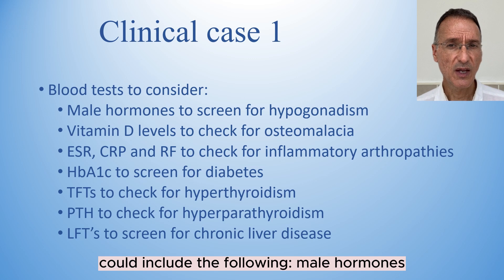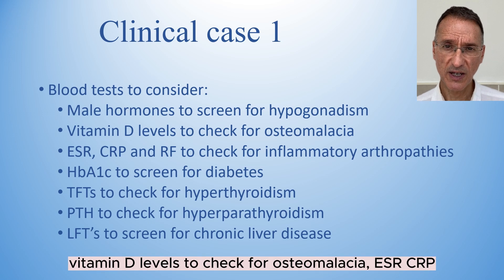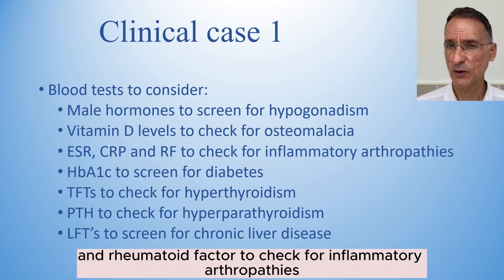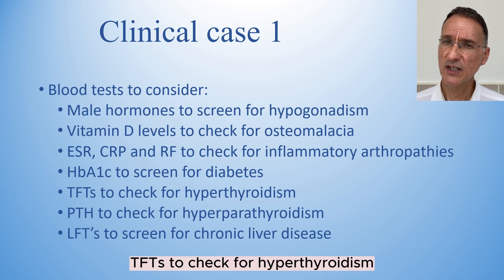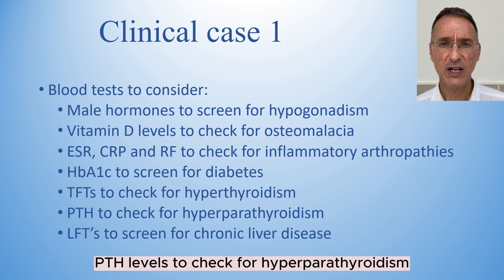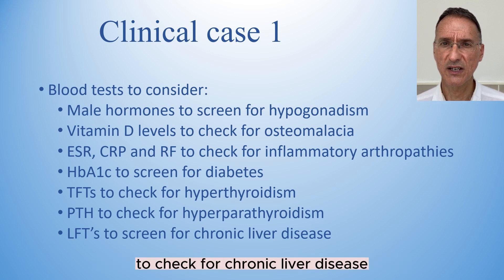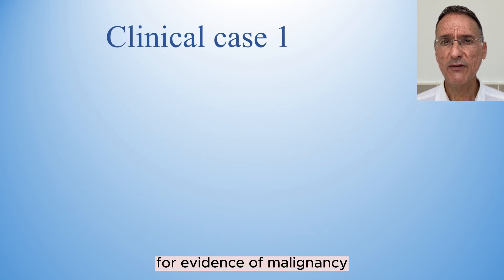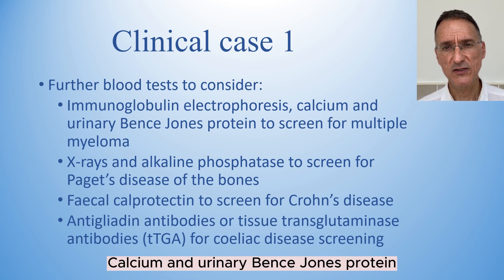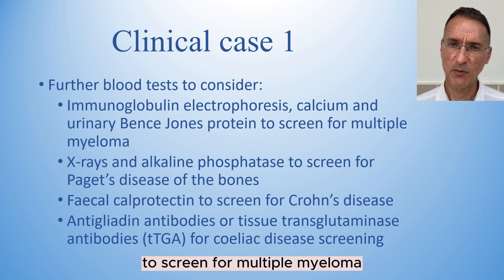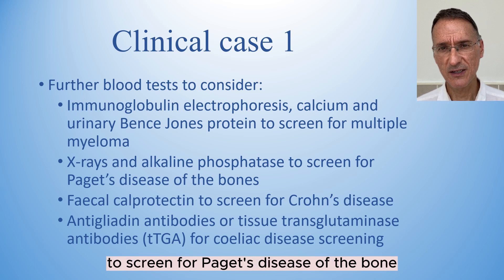Blood tests could include vitamin D levels to check for osteomalacia; ESR, CRP, and rheumatoid factor to check for inflammatory arthropathies; HbA1c to screen for diabetes; TFTs to check for hypothyroidism; PTH levels to check for hyperparathyroidism; and liver function tests to check for chronic liver disease. We will also consider looking for evidence of malignancy including immunoglobulin electrophoresis, calcium, and urinary Bence Jones protein to screen for multiple myeloma, and x-rays plus alkaline phosphatase level to screen for Paget's disease.